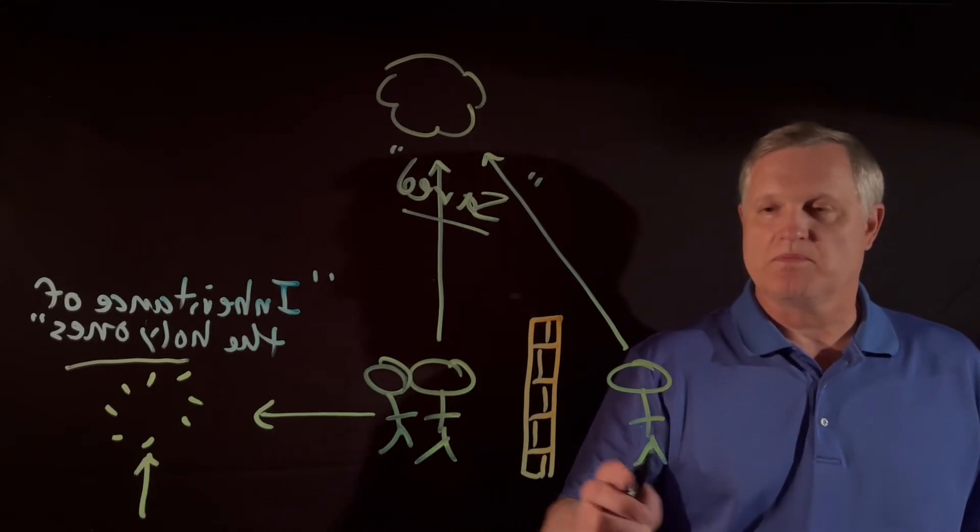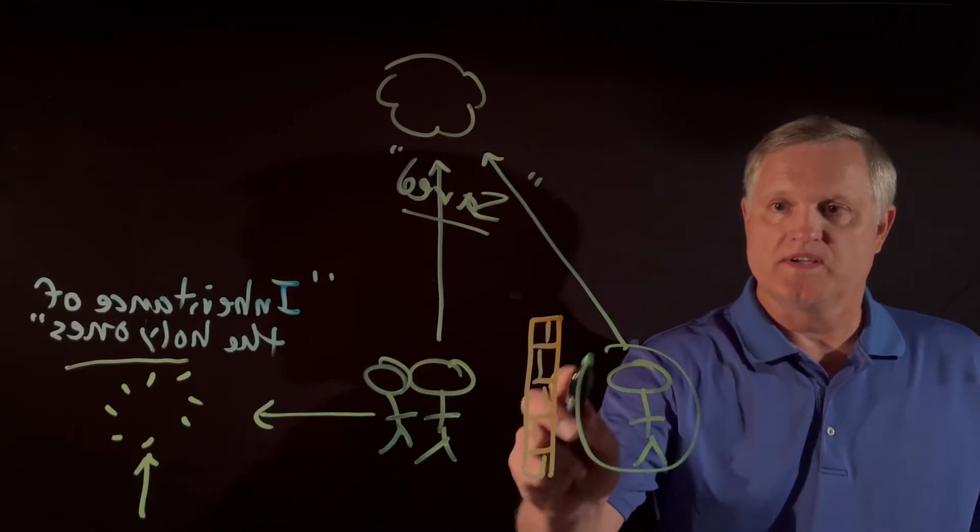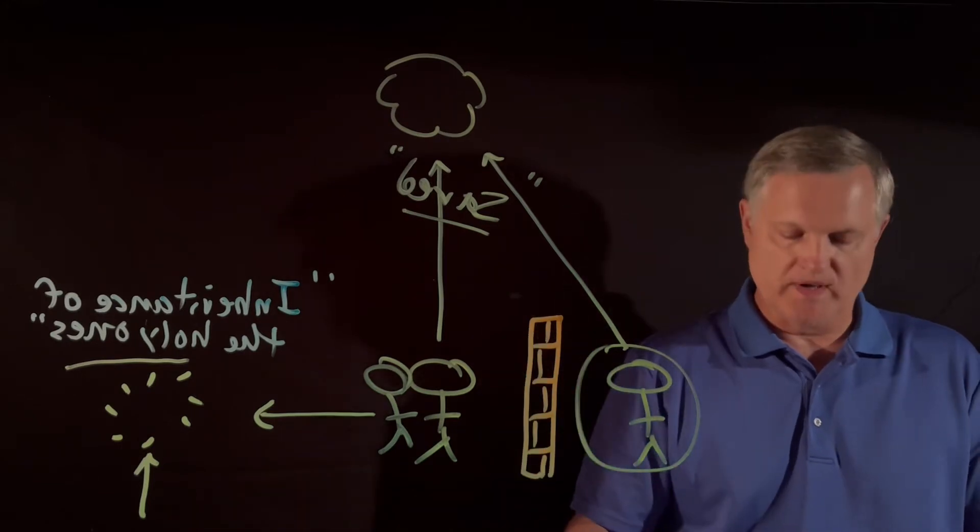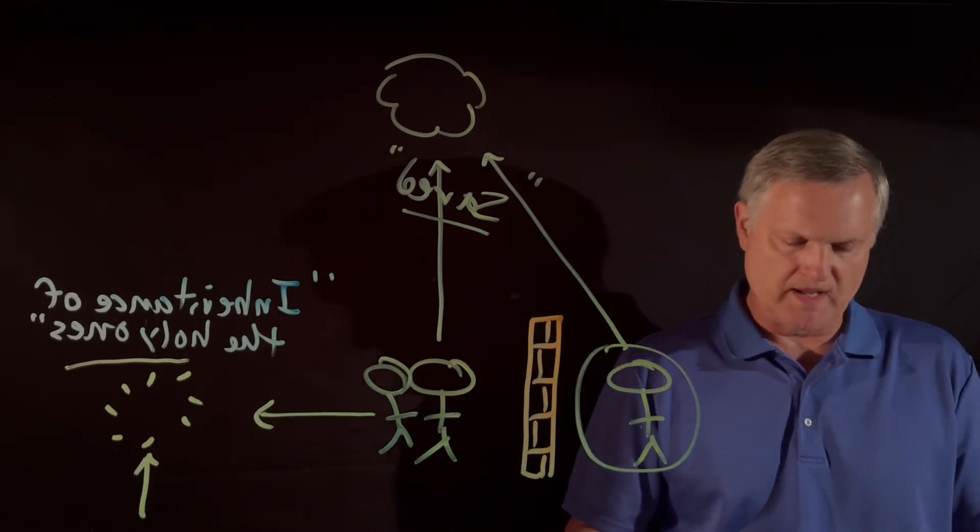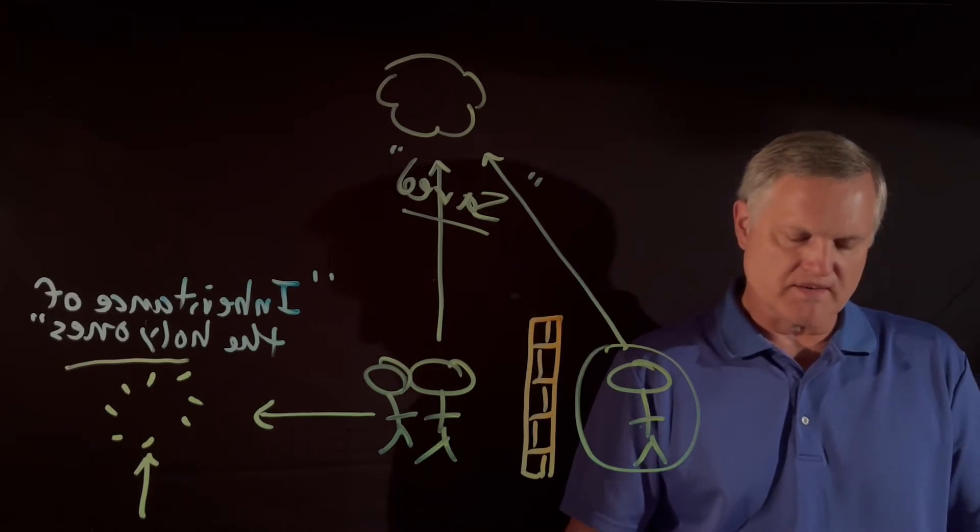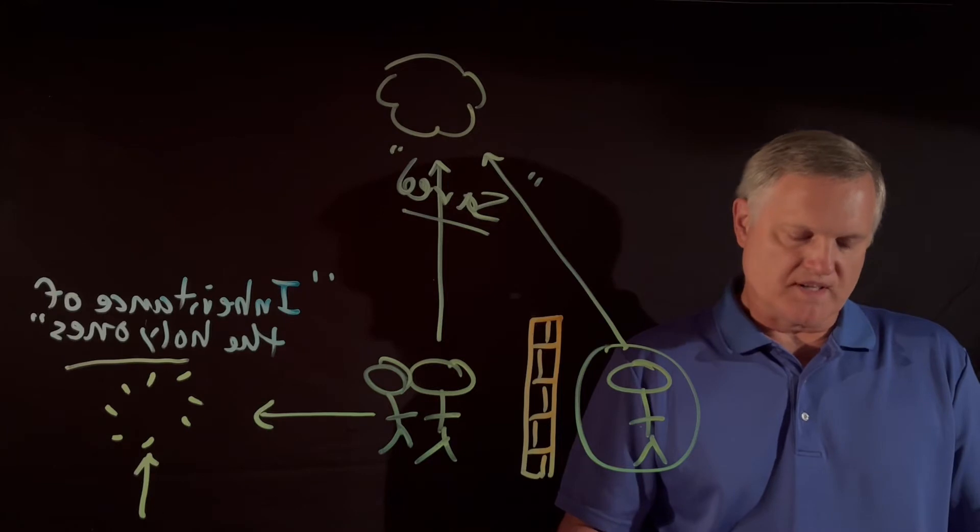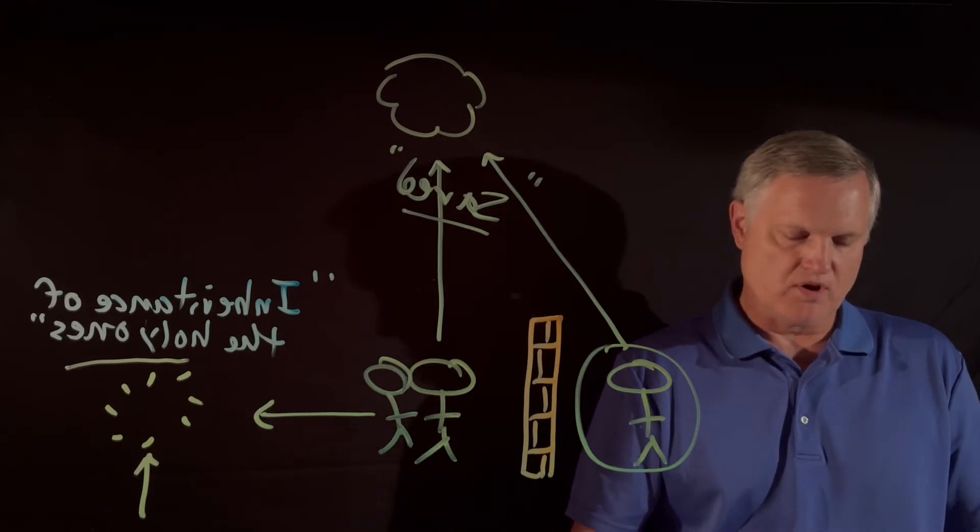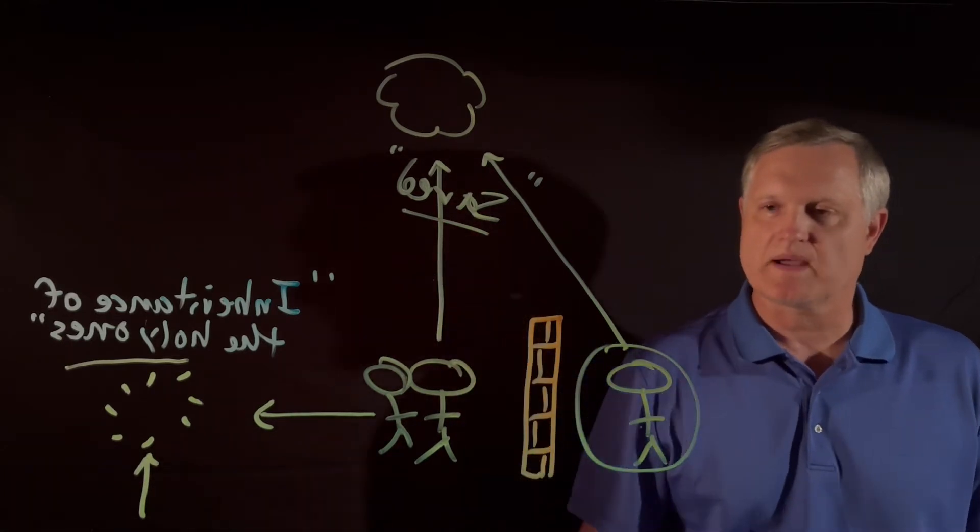We're introduced to three people. One is Cornelius, a quintessential Gentile believer. Listen to how he's described in Acts 10:2. He is a devout man, one who feared God - that's Yahweh - with all his household, who gave alms generously to the people and prayed to God always. That is describing Cornelius.